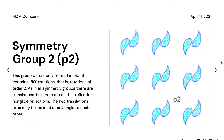Symmetry group two is named P2. This group differs from P1 in that it contains 180-degree rotations — that is, rotations of order two. As in all symmetry groups there are translations, but there are neither reflections nor glide reflections. The two translation axes may be inclined at any angle to each other. This group has elements paired with each other.